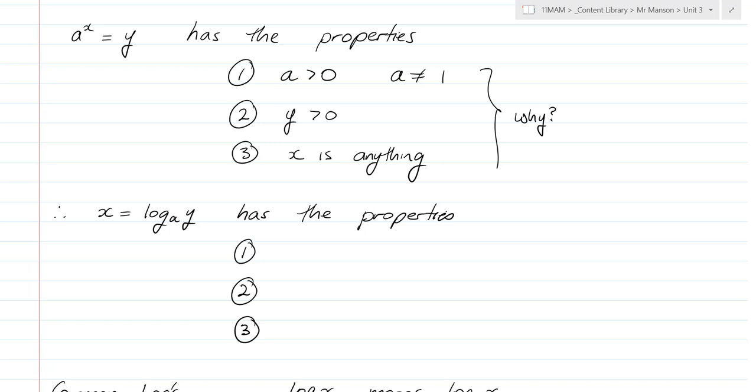And a can be negative, but negative a values create oscillating functions and not the exponentials that we're studying. So for what we're doing, a is greater than 0, and it's not 0 or 1. y is greater than 0, so any positive number to any power will also be positive.